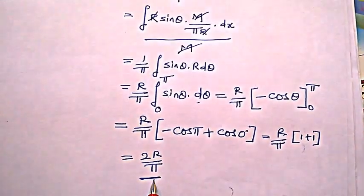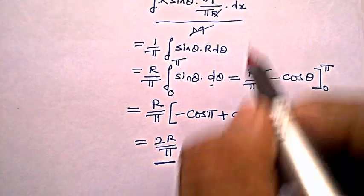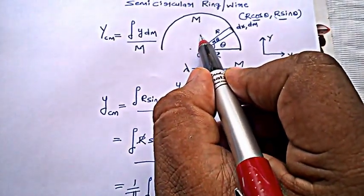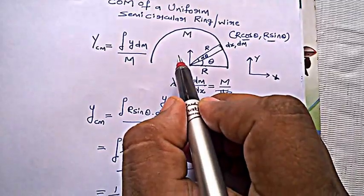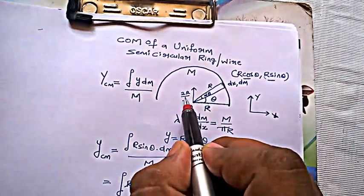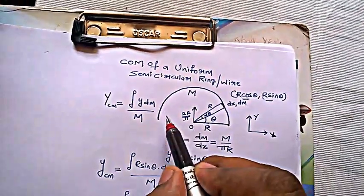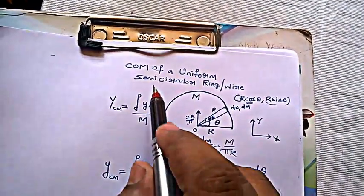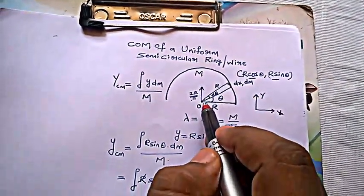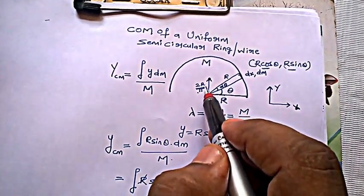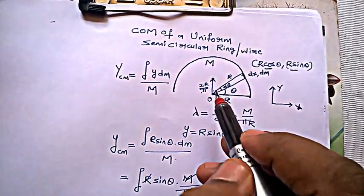So therefore, this is the answer, and 2r by π is a height above which from the origin or from the center the center of mass of a semicircular ring lies. So here lies the center of mass. The center of mass of a uniform semicircular ring or wire is at a distance or height 2r by π from the origin.